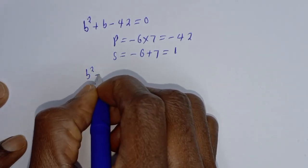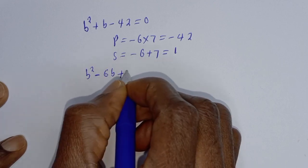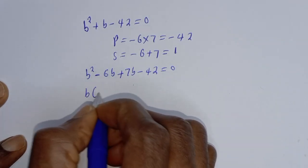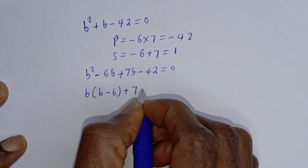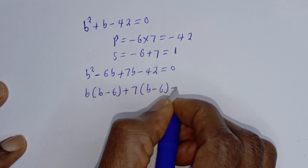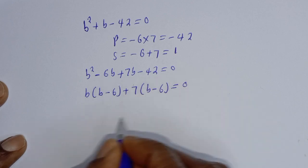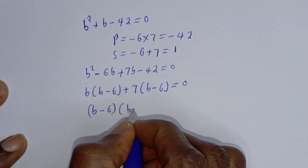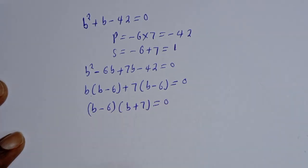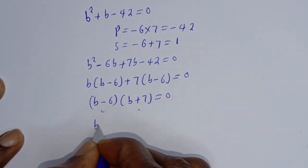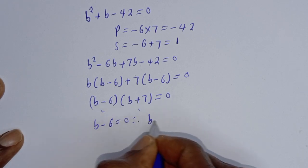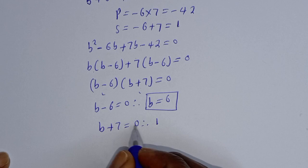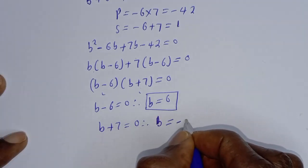Substituting: B squared minus 6B plus 7B minus 42 equals 0. Factoring: B(B minus 6) plus 7(B minus 6) equals 0, so (B minus 6)(B plus 7) equals 0. Therefore B minus 6 equals 0 giving B equals 6, or B plus 7 equals 0 giving B equals minus 7.